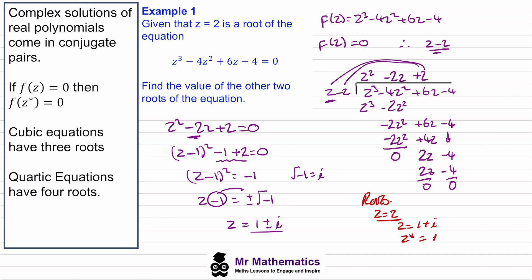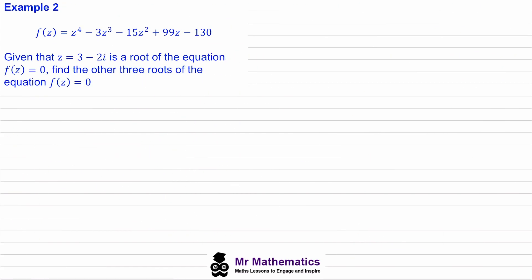So the three roots of the cubic are z equals two, z equals one plus i, and its complex conjugate z equals one minus i. In example two we're going to look at a quartic equation. We're told that f(z) is a quartic and that z equals three minus two i is a root of the equation.